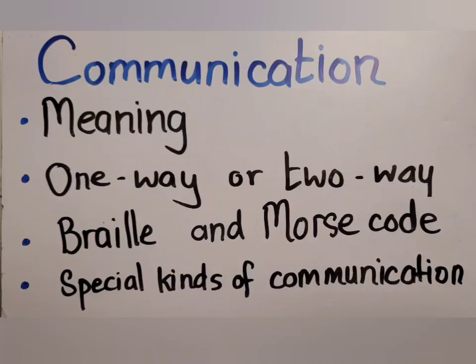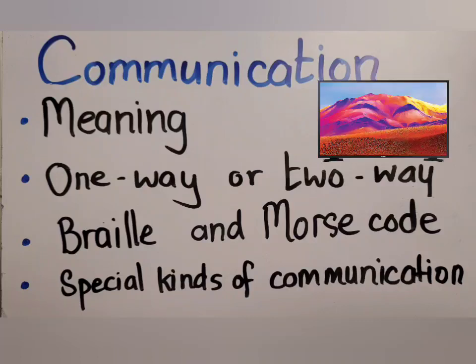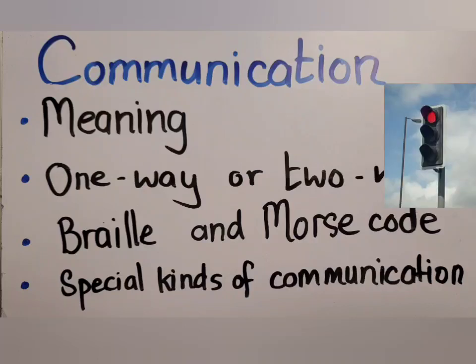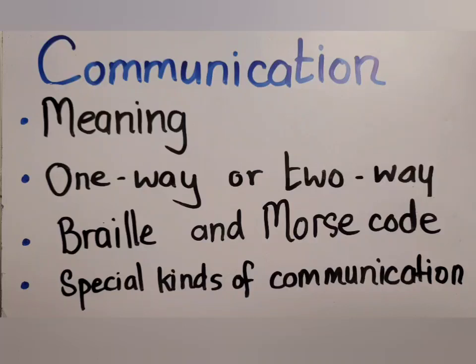One-way communication is when one person sends a message and the other person receives it but cannot answer back. For example, if I'm watching TV, I get information from the TV but I don't answer back to the TV. Same thing with the radio. Same thing with the traffic light — when the traffic light is red, I understand I need to stop, but I don't send a message back to the traffic light.